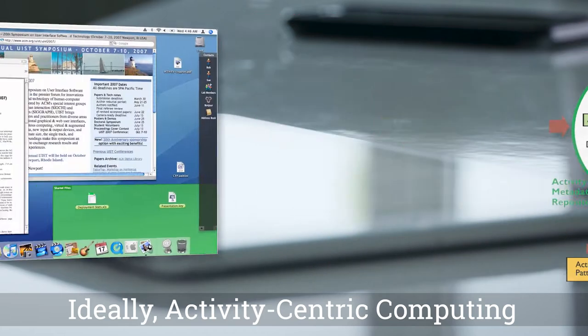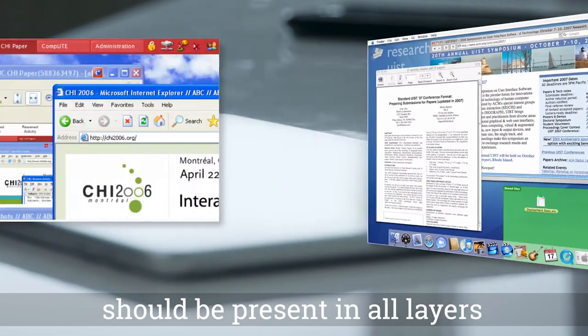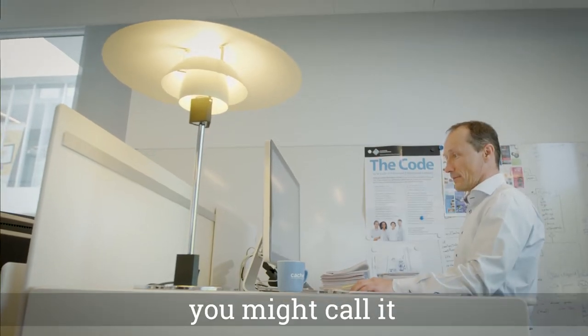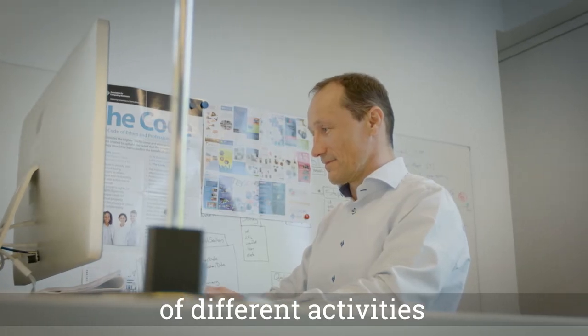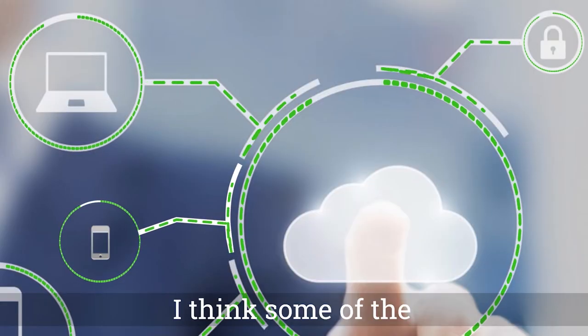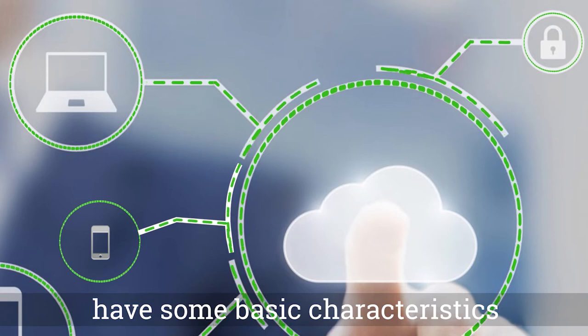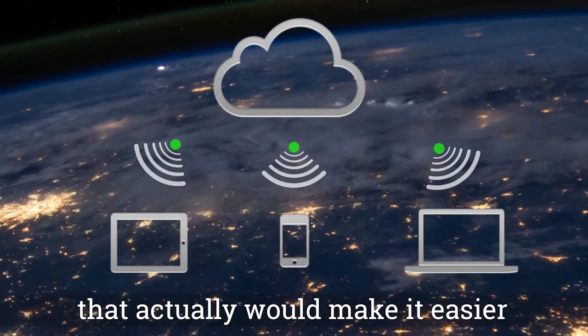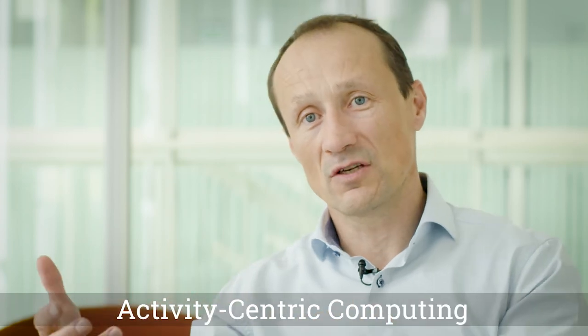Ideally, activity-centric computing should be present in all layers of the computing stack. The orchestration of different activities is something that cuts across the entire operating system. I think some of the cloud-based infrastructure has some basic characteristics that actually would make it easier to implement activity-centric computing.